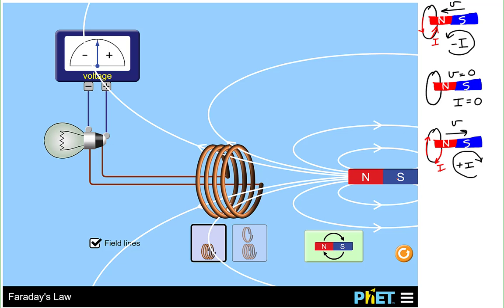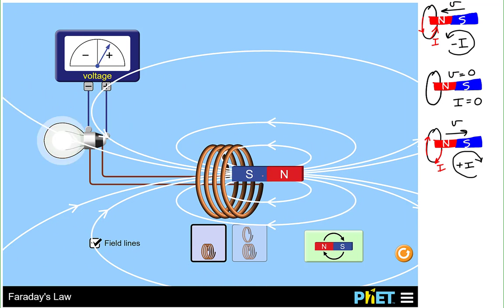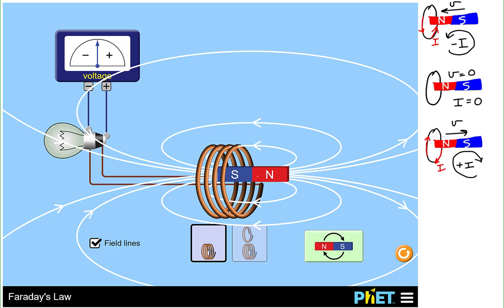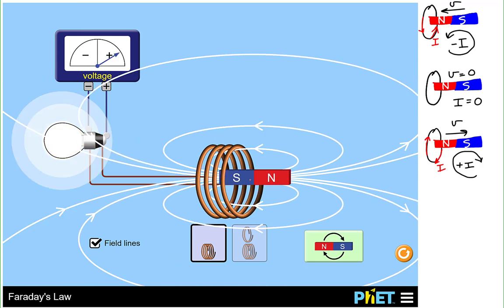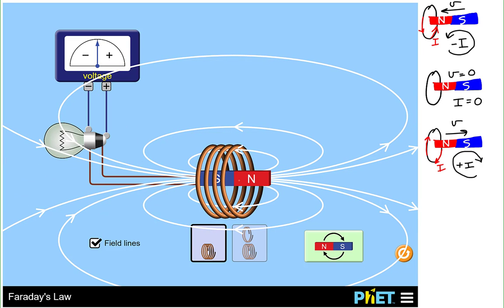So there's something about changing magnetic flux that induces a current. Let's reverse the orientation of our magnet and observe what happens to the magnetic flux and the voltage in our circuit. Notice when the south pole enters the loop, we had a positive voltage indicating a positive current. The number of south magnetic field lines is increasing, and we end up with a positive current — the magnetic flux increased in such a way as to produce a positive current.